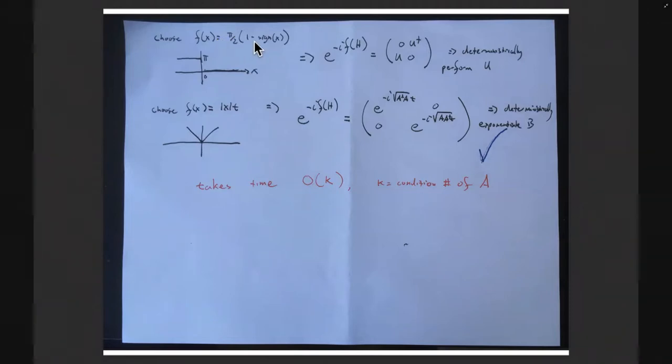If f of x is pi over two times one minus the sine of x, so when x is less than zero, whoops, then f of x is just pi. And when x is greater than zero, then f of x is zero, then it's not hard to verify that e to the minus i f of h is actually the following matrix. Down in the left, lower left-hand corner, it has U, where U is the polar decomposition unitary that we wish to perform. And the upper right-hand part, it has U dagger, and it's got zeros here. And so with this matrix, then we can actually, we can construct this deterministically, and now we can deterministically apply this operator U.